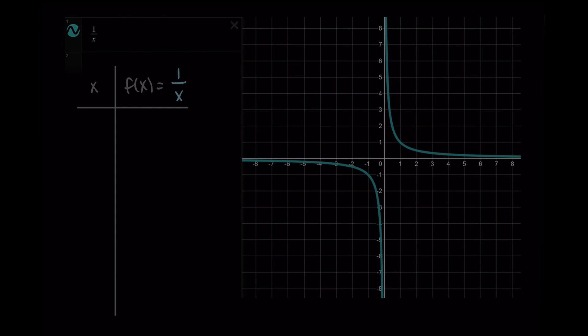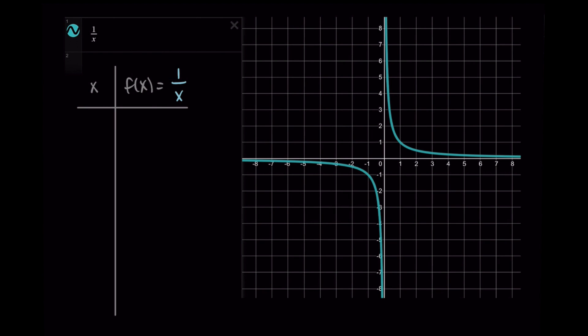Let's look at some graphs and talk about the characterizing features of rational functions. In later videos, we'll identify these more precisely. Let's start with 1 over x. To give us a sense for what's going on, I'm going to plot quite a few values. We have a table here with x and f of x, which is 1 over x, so we'll look at inputs and outputs.